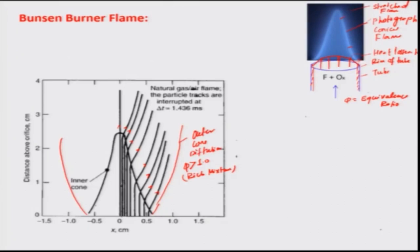If you look at it, this parabolic velocity profile must be ensured such that you can really get the same boundary condition for different sets of readings. That is very important for conducting experiments, so that results can be repeated easily.